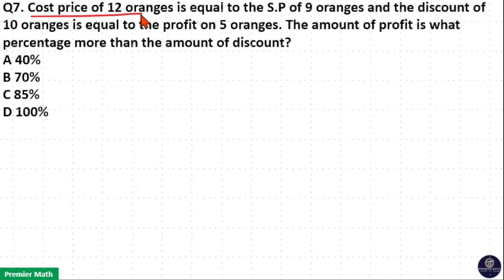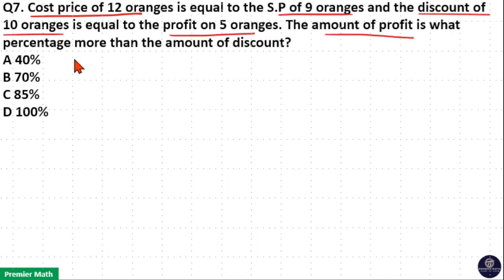The cost price of 12 oranges is equal to the sell price of 9 oranges, and the discount on 10 oranges is equal to the profit on 5 oranges. The amount of profit is what percentage more than the amount of discount?